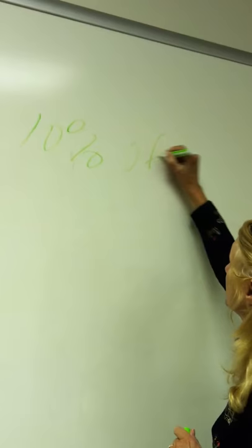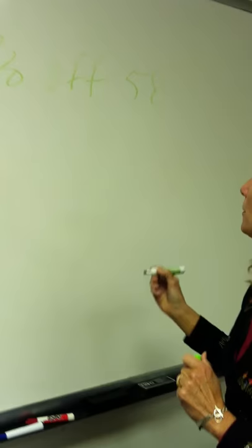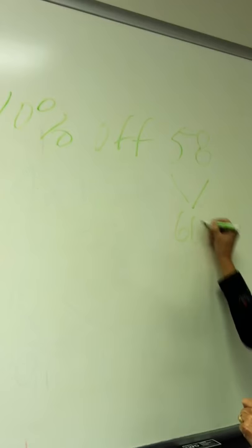10% off of a $58 item. And what I would do is take the 58 and make it to a number that is easier to deal with, which is 60.